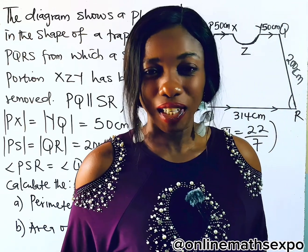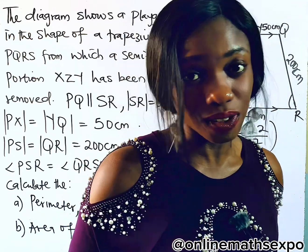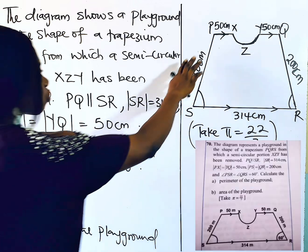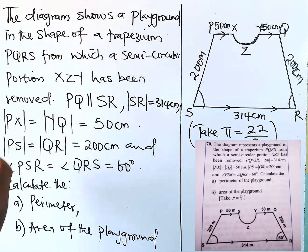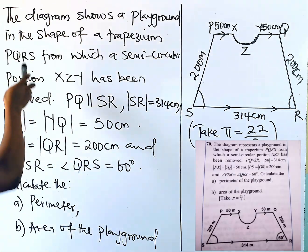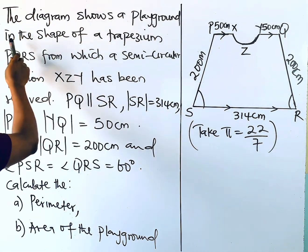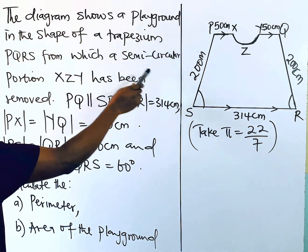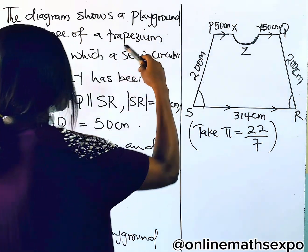Let me give us this question and we'll react to it together. It's just so easy. Now, this is the diagram we are given. Let's read the questions. We are told the diagram shows a playground in the shape of a trapezoid. This is the shape. Trapezoid, if you are in the US, is called trapezoid.